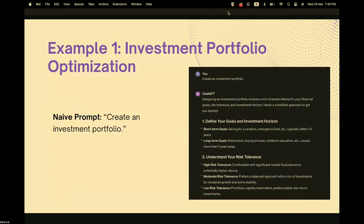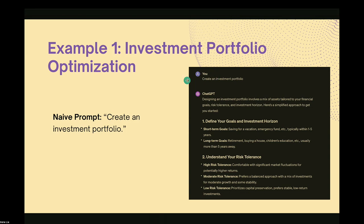Since this is a fintech collaboration with Hacker School, we've included some fintech-related examples. For investment portfolio optimization, the naive input is simply 'create an investment portfolio.' It's categorized as naive because there's no context, no information, and no specificity. The output from ChatGPT is very general — the kind of thing you'd Google — and not really helpful.